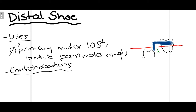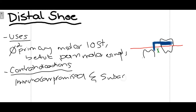There are certain contraindications where the distal shoe should not be used. These include patients who are immunocompromised and patients at risk for subacute endocarditis. In these patients, the distal shoe is contraindicated because the alveolar mucosa is penetrated, creating a chance that infection might develop. So a decision must be made whether to use it or not.